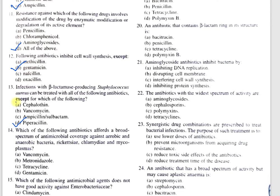Question number 14: Which of the following antibiotics offers a broad spectrum of antimicrobial coverage against aerobic and anaerobic bacteria, rickettsia, chlamydia, and mycoplasma? A, vancomycin; B, metronidazole; C, tetracycline; D, gentamicin. The correct answer is C, tetracycline. Tetracyclines are broad spectrum antibiotics. They inhibit protein synthesis and can act on aerobic and anaerobic bacteria, rickettsia, chlamydia, and mycoplasma.